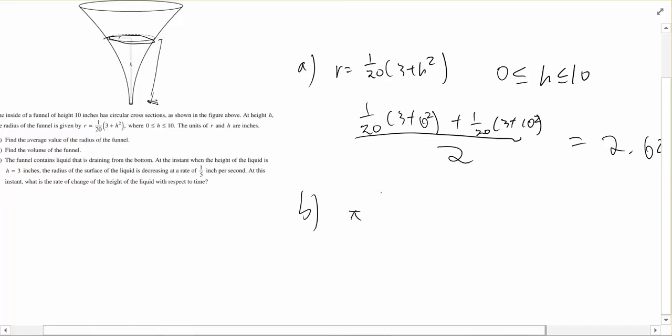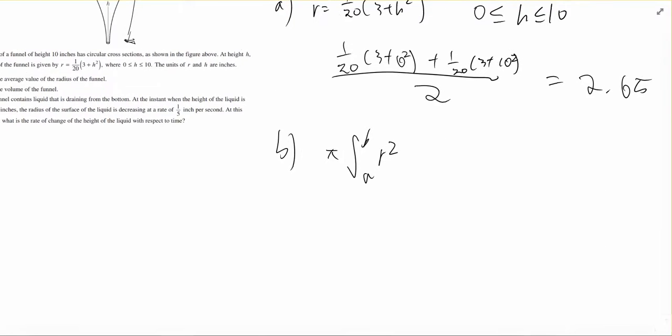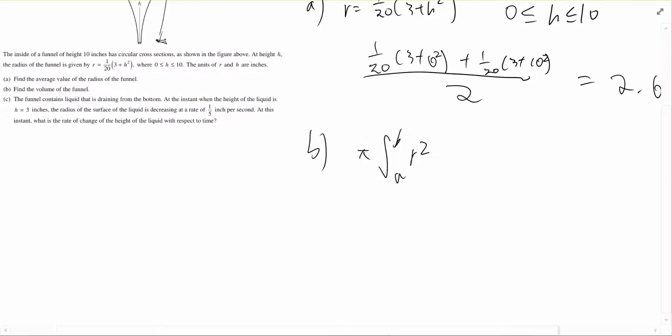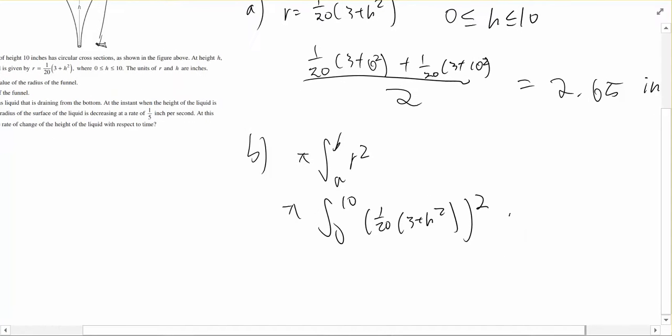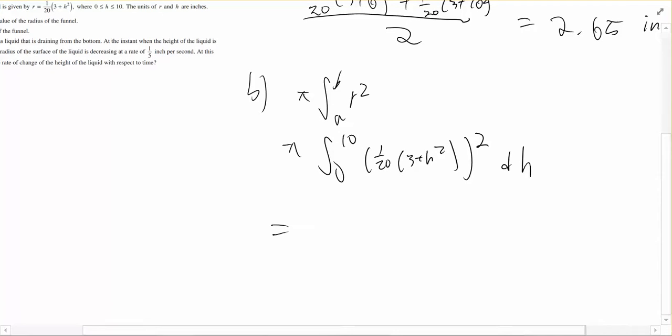a to b would be 0 to 10. r would be the given equation that we have for this problem, which is 1 over 20 times 3 plus h squared. So if we plug that in, 1 over 20 times 3 plus h squared, squared, and dh, we get something like 174, actually 173.494 inch squared.